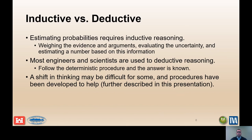The matter of probability assignment can be approached from two perspectives. Inductive reasoning is a top-down approach based fundamentally on available data and its interpretation; it answers the question 'what happens if?' and logic moves from cause to effect. Deductive reasoning is a bottom-up approach of generating knowledge based on fundamental physics; it answers 'how can a particular outcome come to pass?' and logic moves from effect to cause. Most engineers and scientists are used to deductive reasoning. Estimating probabilities requires inductive reasoning — weighting the evidence and arguments, evaluating the uncertainty, and estimating a number based on this information.